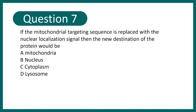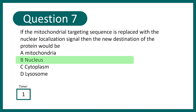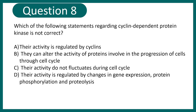Question 7: If the mitochondrial targeting sequence is replaced with a nuclear localization signal, what should be the destination of the protein? Options: mitochondria, nucleus, cytoplasm, or lysosome. These are easy questions from cell biology. The correct answer is nucleus.